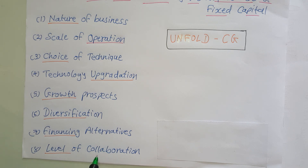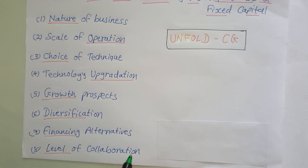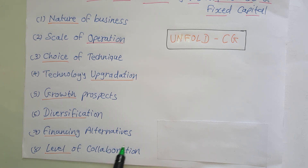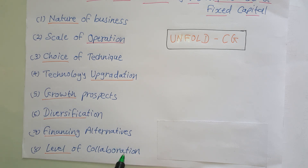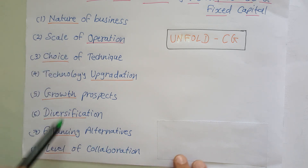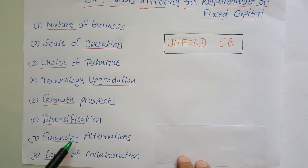Next is level of collaboration. Certain business organizations share some facilities with each other — for example, ATM machines, where the services are jointly used. This is feasible when the scale of operation of each business is not sufficient to make full use of the facility on their own. By doing such collaboration, it reduces the level of investment in fixed assets, so each participating organization has to invest less in fixed capital.